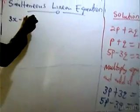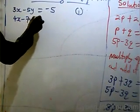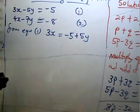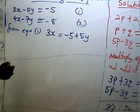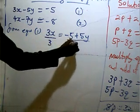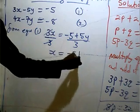In substitution method, I make one unknown the subject of the formula and substitute it into the other equation. We are given 3x minus 5y equals minus 5 as equation 1, and 4x minus 7y equals minus 8 as equation 2. From equation 1, 3x equals minus 5 plus 5y. Dividing both sides by 3, x equals (minus 5 plus 5y) all over 3. I will now substitute this into equation 2.